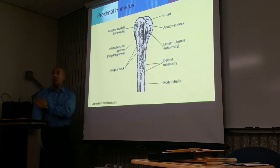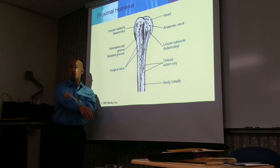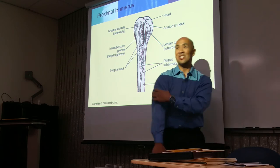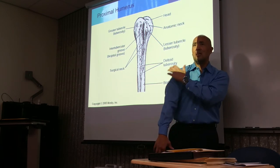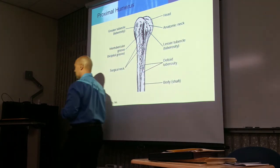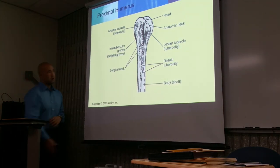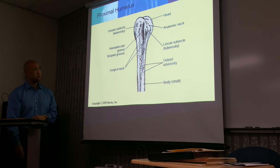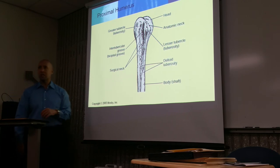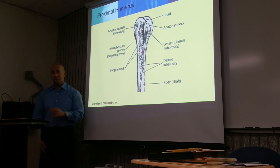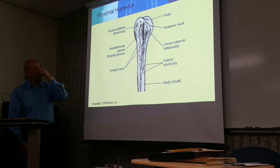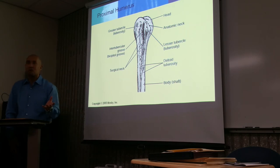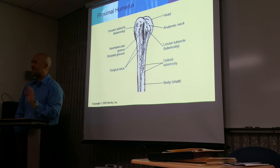Moving up from the elbow, this part of the humerus is the shaft — the body. It's always the ends that are more complicated. Let's start with the head of the humerus. The head of the humerus articulates with the scapula — specifically the glenoid fossa — and this is known as the scapulohumeral joint, though we just call it the shoulder joint.